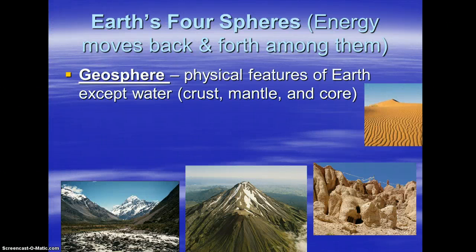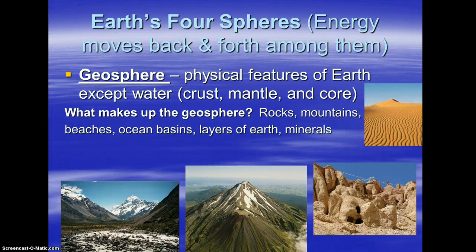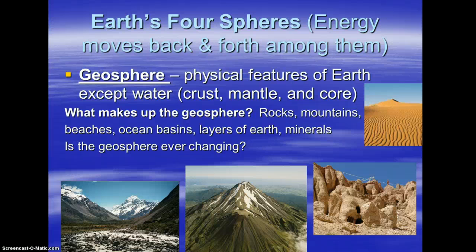Another sphere is the geosphere. Geo means Earth, so this is the physical features of Earth — all except water, which belongs to a different sphere. We have the crust, the mantle, and the core — the layers of our planet. We also include rocks, mountains, beaches, ocean basins, layers of the Earth, and minerals. Is the geosphere ever changing? The answer is yes. We have erosion from wind and water, plate tectonics creating trenches and mountains, deposits that are made, and glaciers that move through and plow through an area, creating different landscapes.